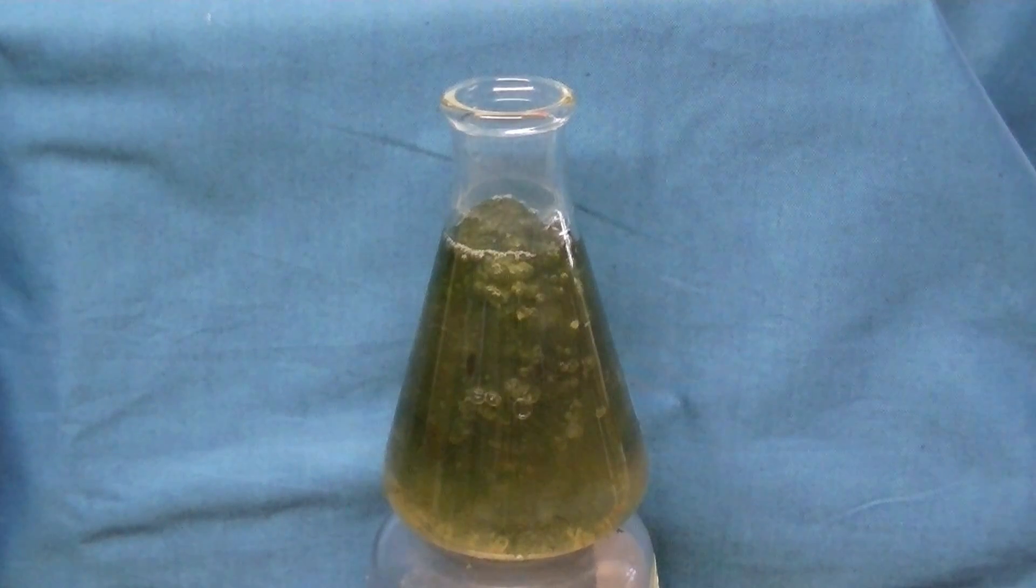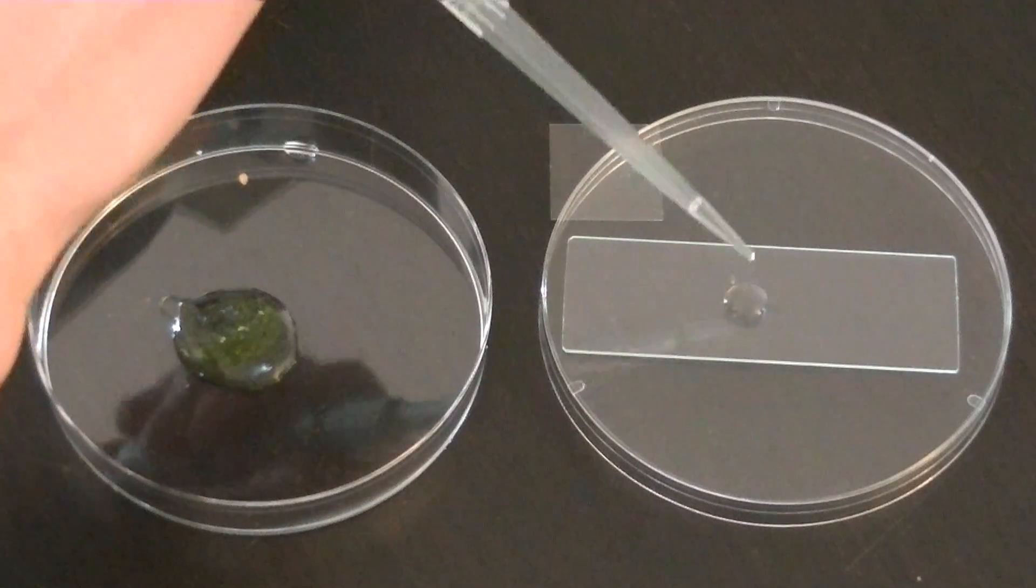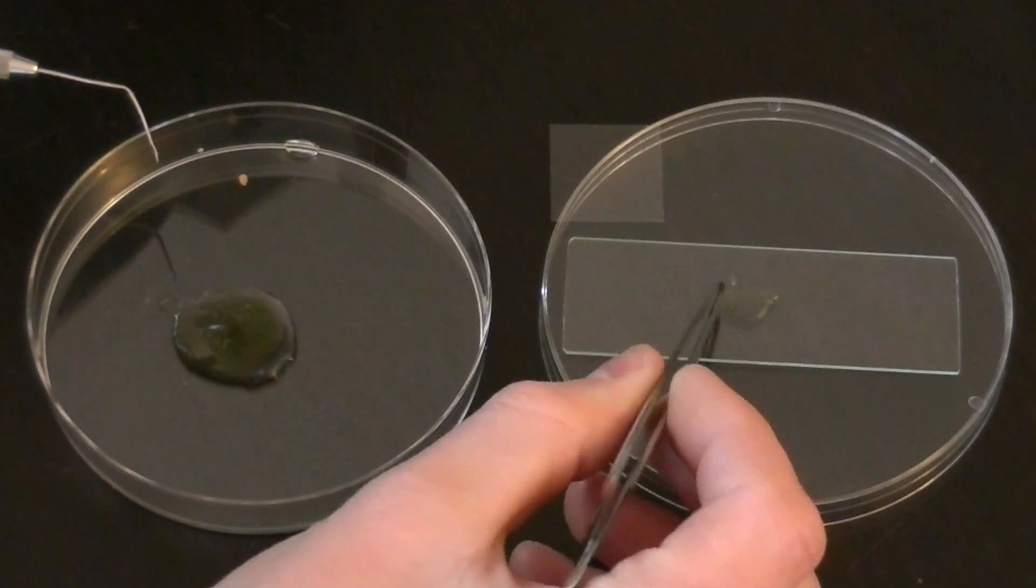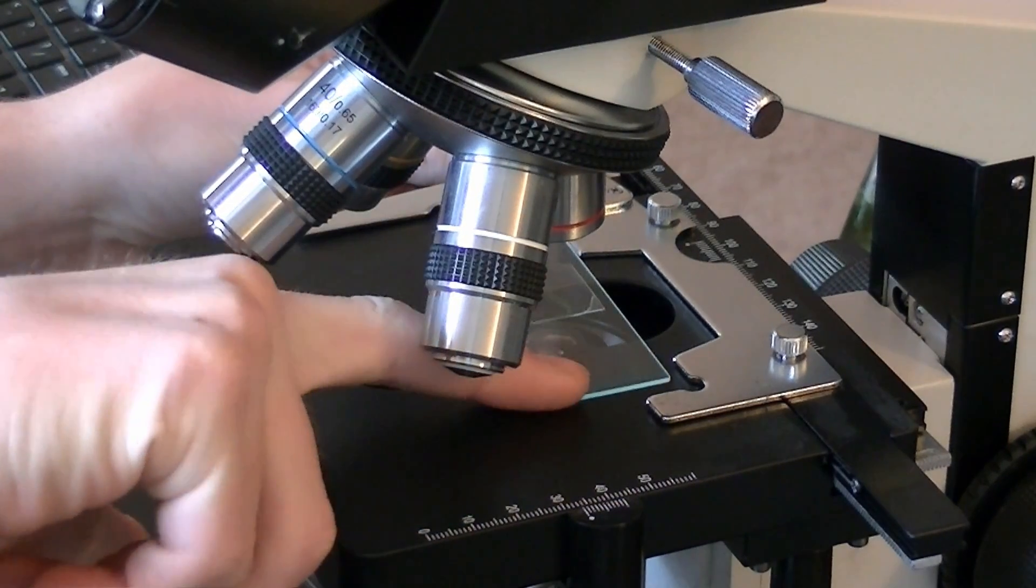We're going to start this video by preparing a slide of some hair algae which we've cultured over the past few weeks. We place a small drop of water onto a slide followed by a very small sample of the organism. Then we set the slide onto our compound microscope for viewing.